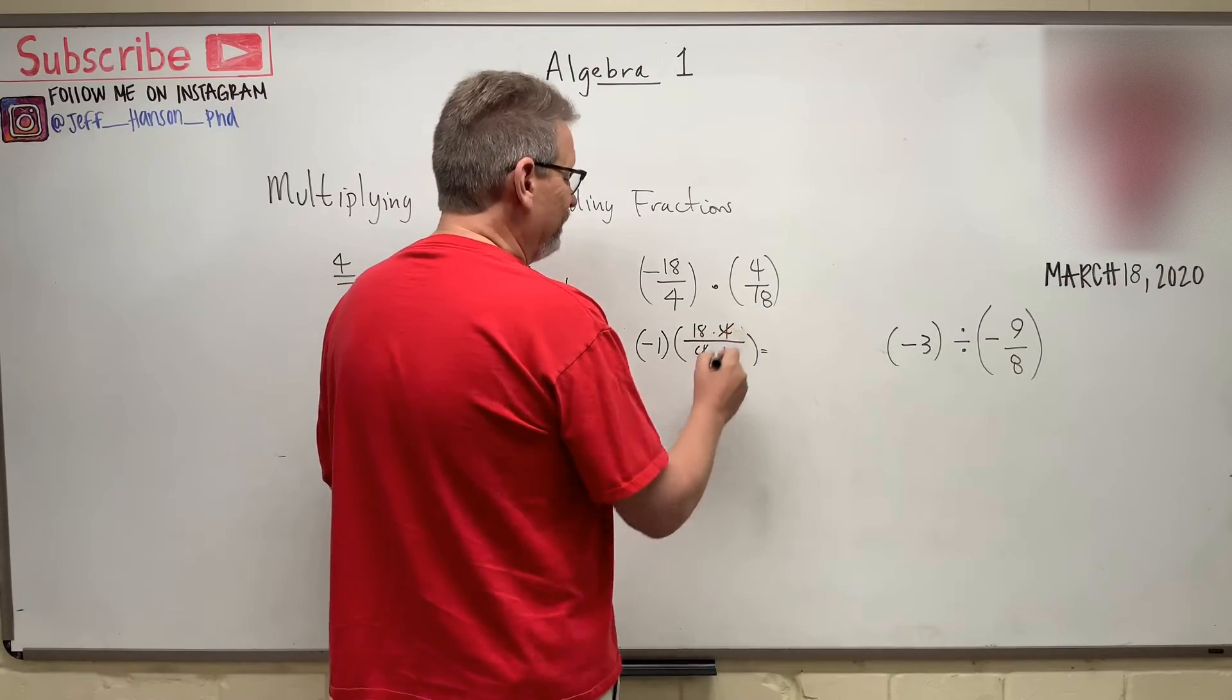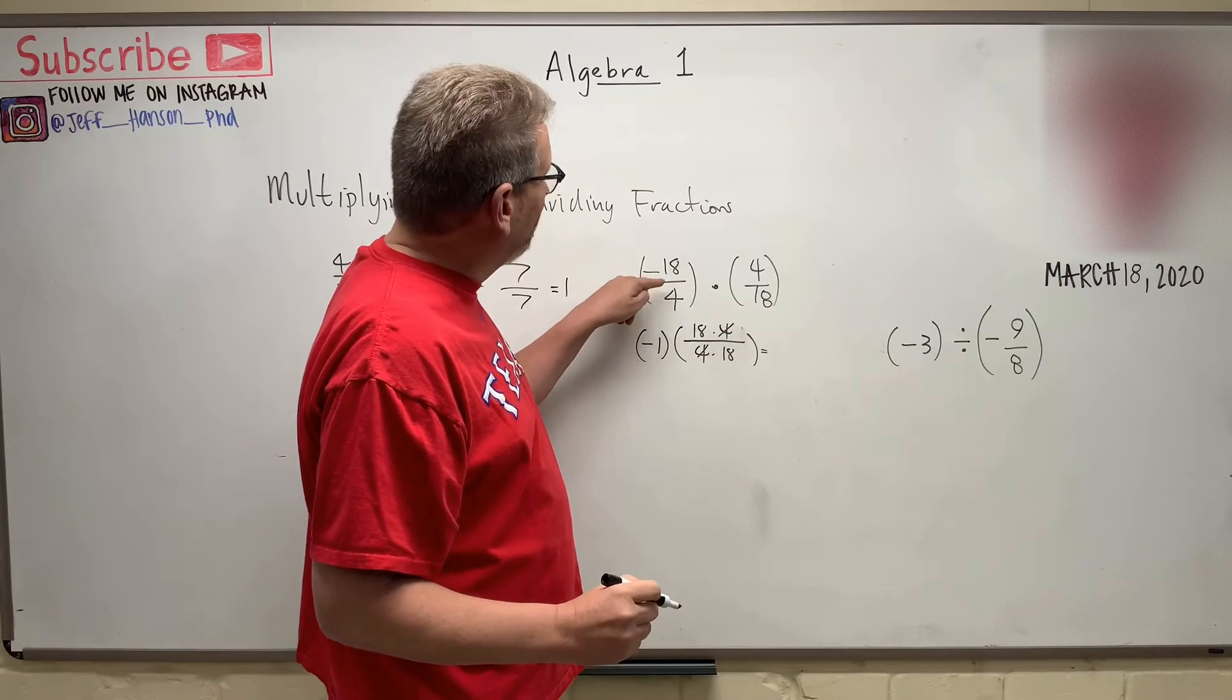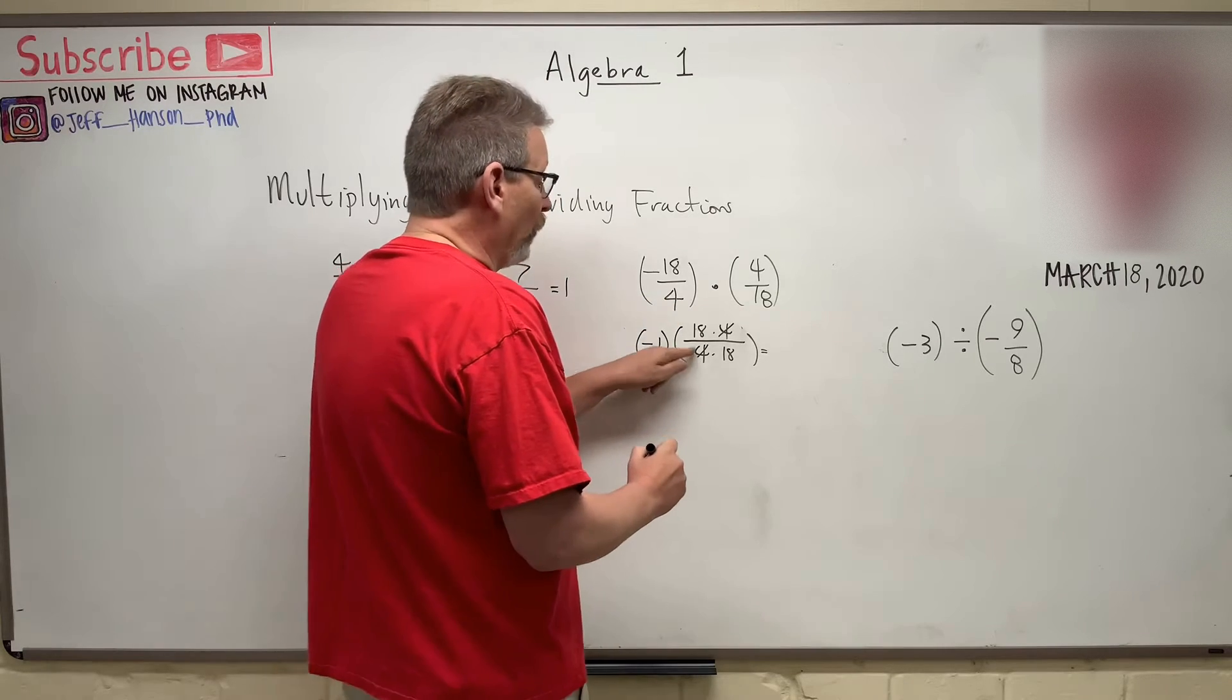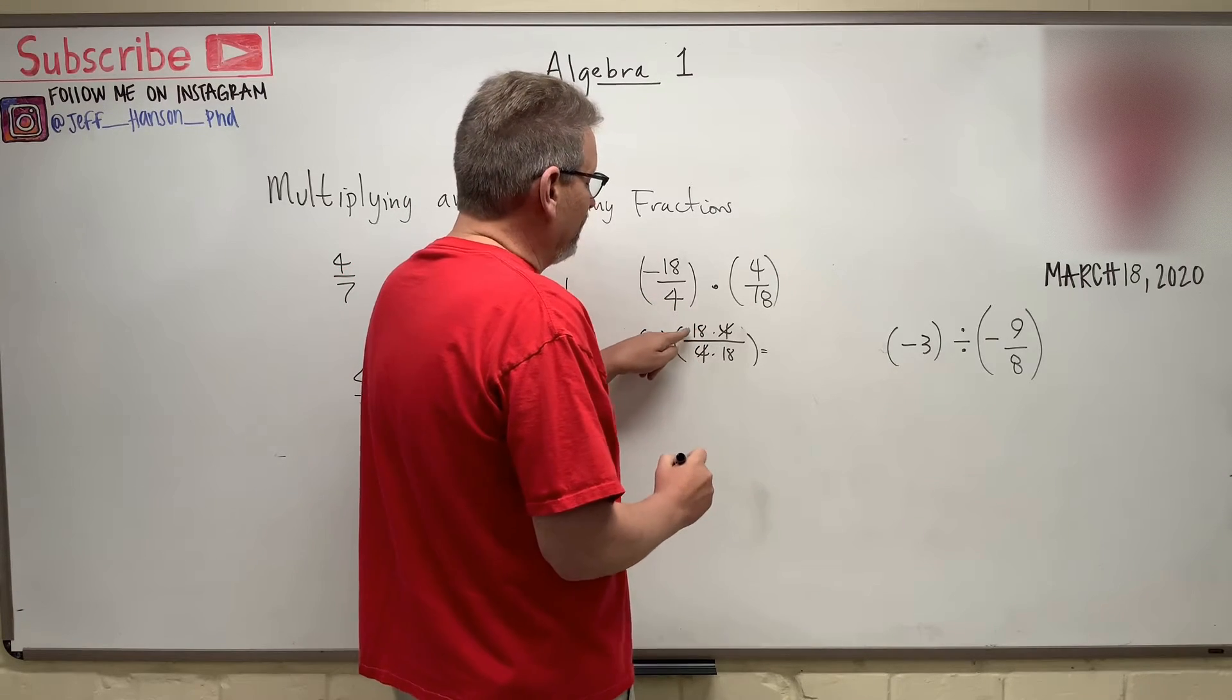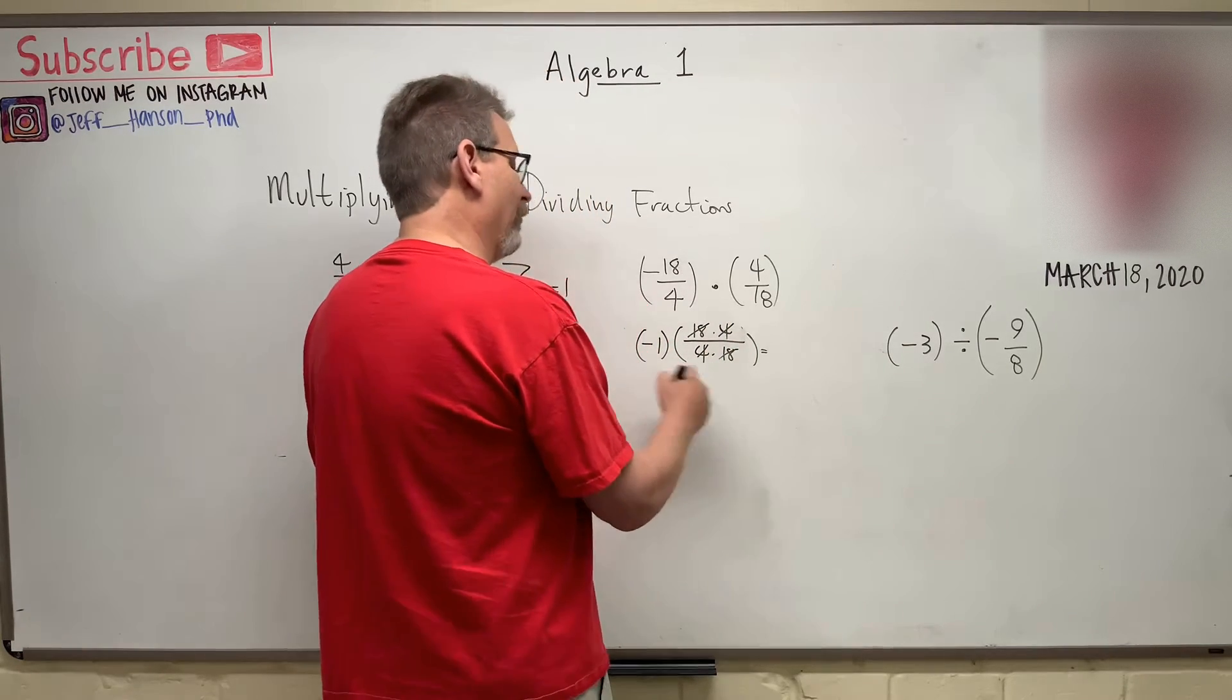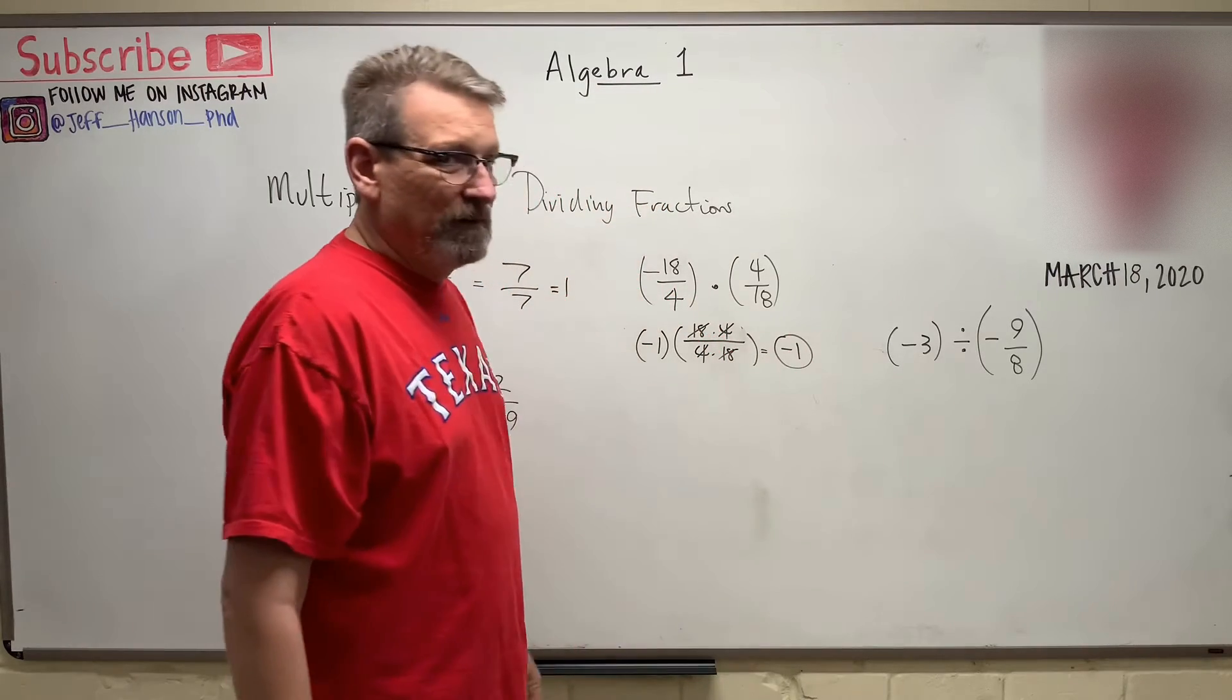Now, that 4 divides into that 4, right? You can think of the fraction means that this number is divided by that number. So the 4 divided by 4 turns into 1 and then 18 over 18 turns into 1. And so, then 1 times negative 1 is just negative 1.